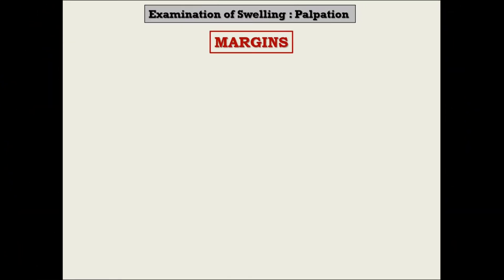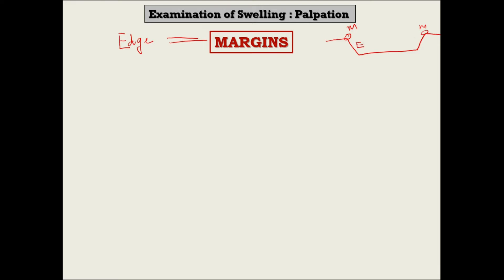The next assessment in the series of palpation is the margins of the swelling. In the case of a swelling, edge and margin are the same things. However, these two are quite different in the case of an ulcer — in an ulcer, the margin is the junction between the ulcer and normal epithelium, while the edge is the tissue between the margin and floor of the ulcer.